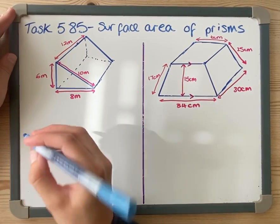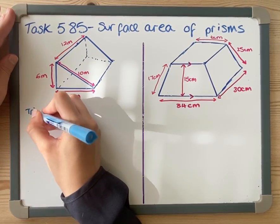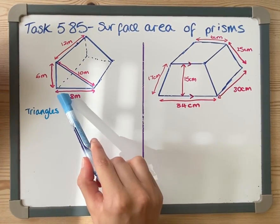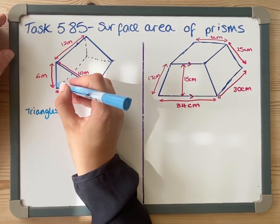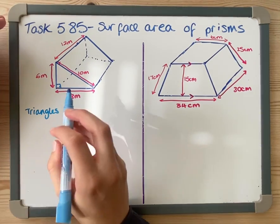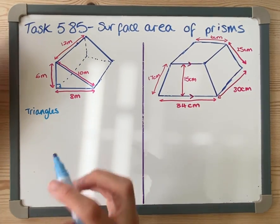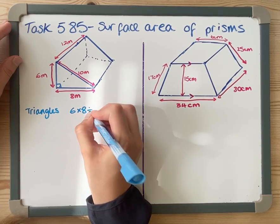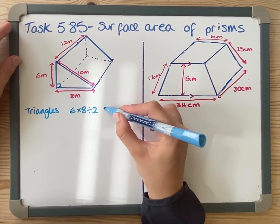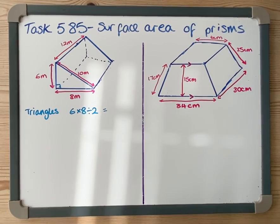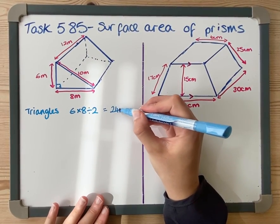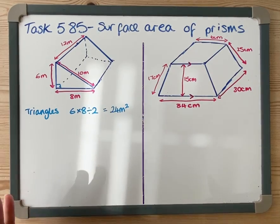I'm going to start with the triangles because there are two of them. With the triangles, remember we've got to do the base times the perpendicular height, that's the right angle, and then divide it by two. So we're going to have 6 times 8 divided by 2. 6 times 8 is 48 and divide that by 2, that is 24 meters squared.